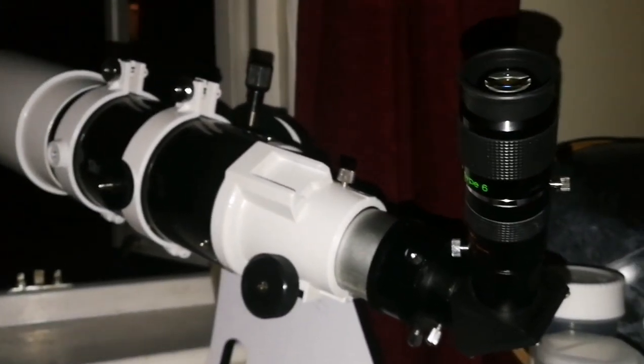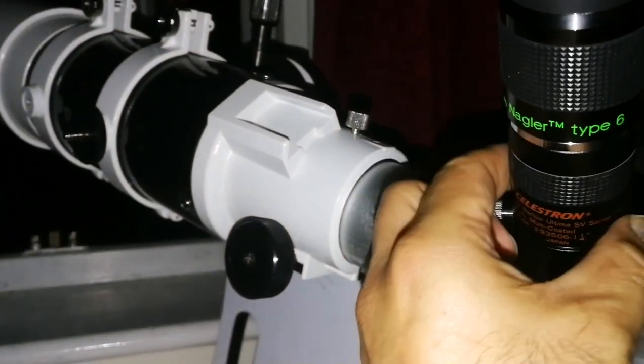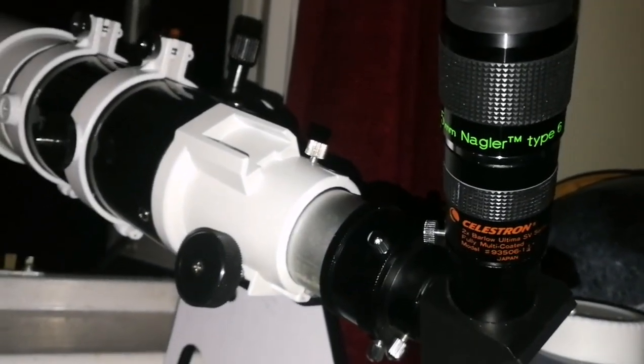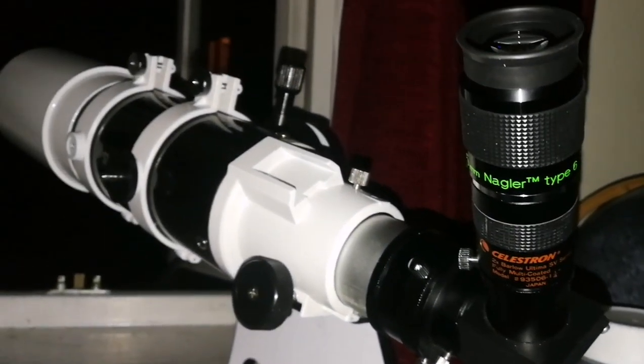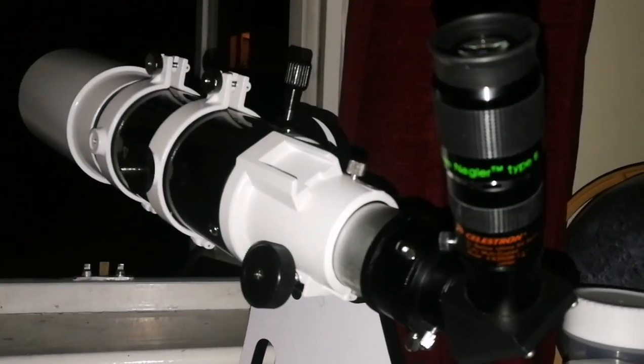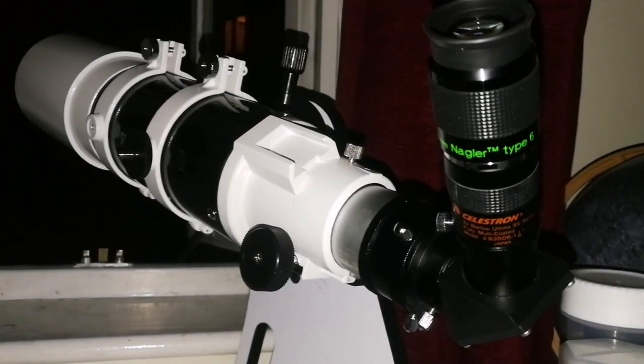And that way you will have something which is like an apochromat, or the proper name for that is a Fraunhofer telescope. That means you will have a telescope which has a long focal length, and through that you will actually have less chromatic aberration.